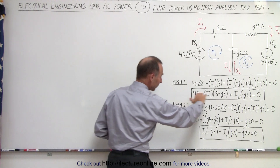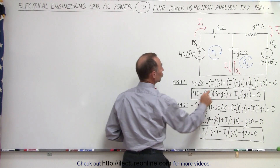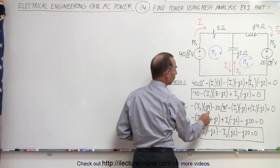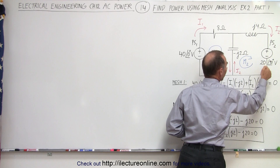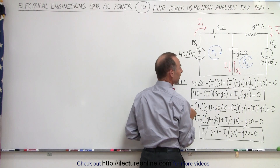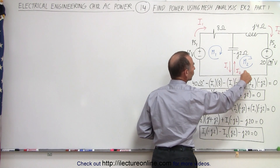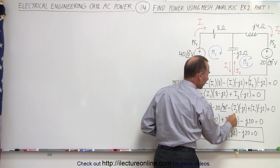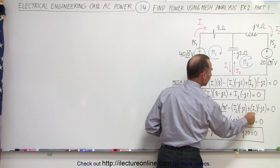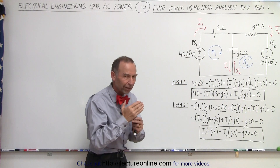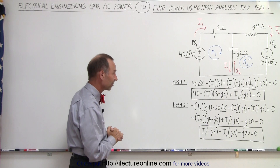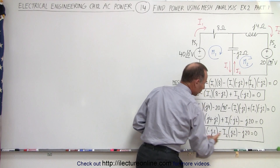We simplify that and then start mesh 2 from this corner. We have a voltage drop across the inductor, so minus I2 times J4. We have a voltage drop across the power supply going from positive to negative terminal, so it's minus 20 at a phase angle of 90 degrees. We have a voltage drop relative to I2, which is minus I2 times minus J2, and a voltage rise relative to I1, so plus I1 times minus J2. If you do things carefully like that you're less likely to make mistakes — and it is really easy to make mistakes here. Simplifying that, we have our second mesh equation.